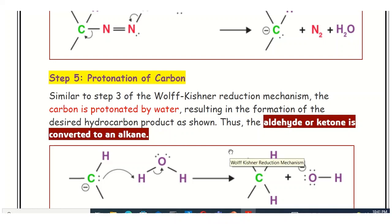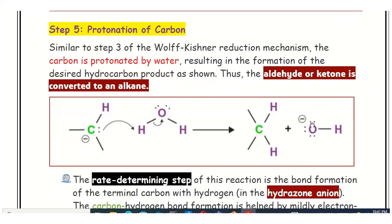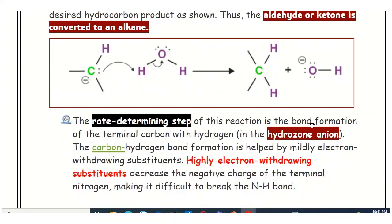The desired alkane product depends on the type of aldehyde or ketone used in the Wolff-Kishner reduction. For example, if a simple acetaldehyde (or acetone) molecule is used, it will be converted into ethane. This is how the aldehyde or ketone is converted into the alkane. Now let's consider the rate-determining step — the slowest step of the reaction.